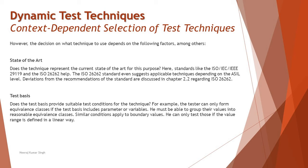The next factor to consider is the test basis — what kind of information and documentation you have from the specification, or what you are referring to in order to derive test cases. From foundation, we know that for black box we have requirements, for white box we have code or structure, and for experience-based we have past experience. The question is: does the test basis provide suitable test conditions for the technique? For example, a tester can only form equivalence classes if the test basis includes parameters or variables, and boundary values can only be tested if the value range is defined in a linear way.